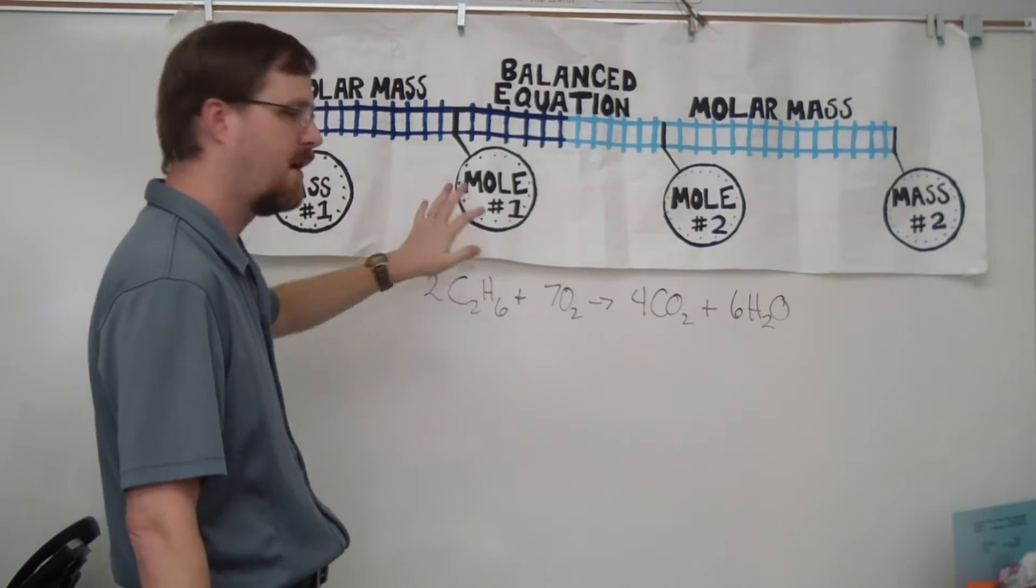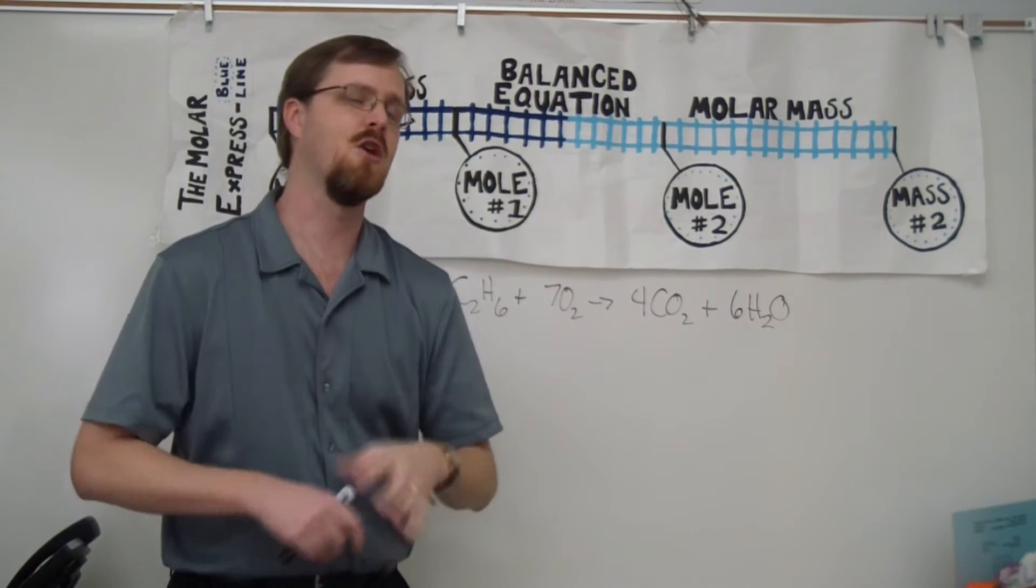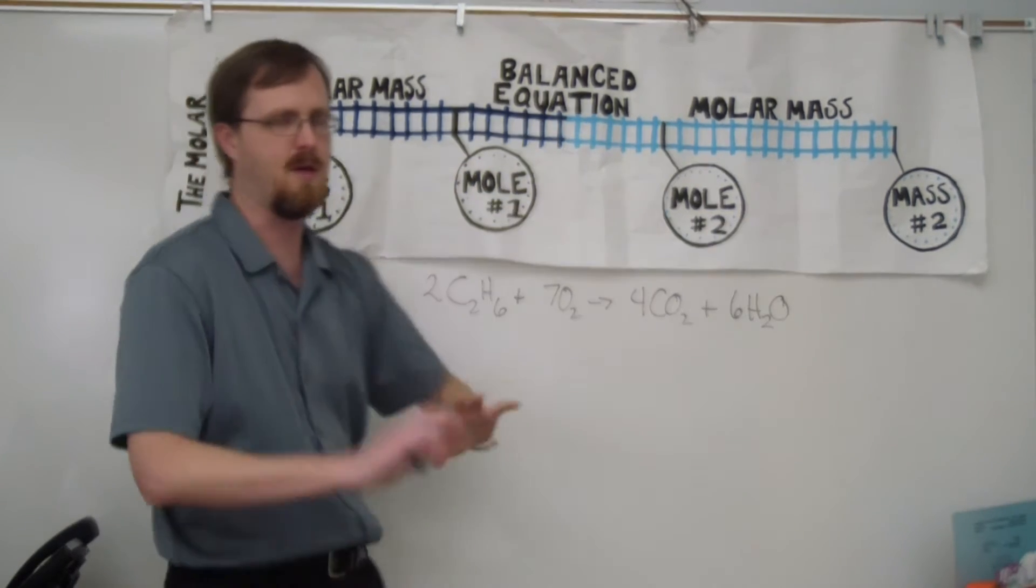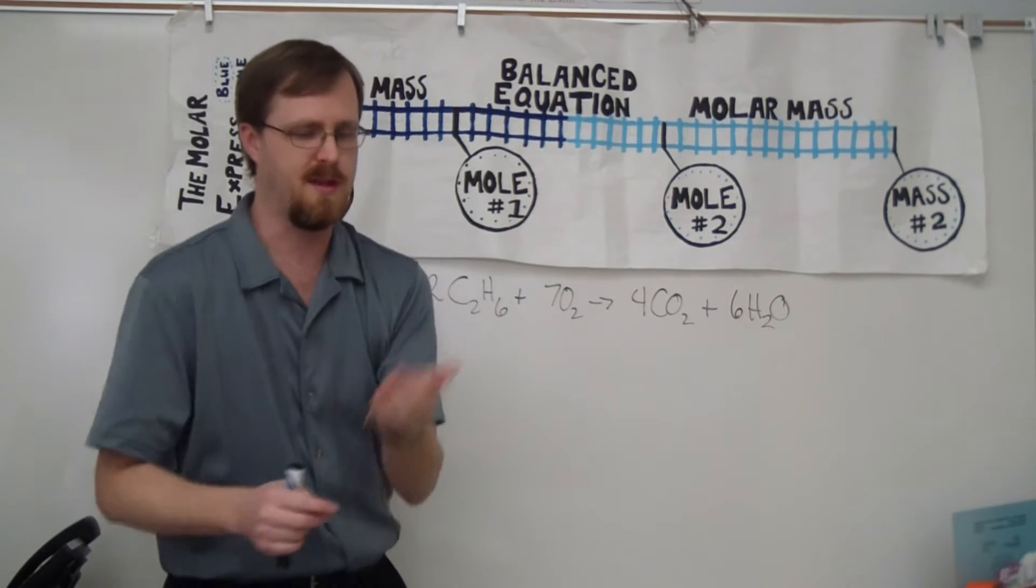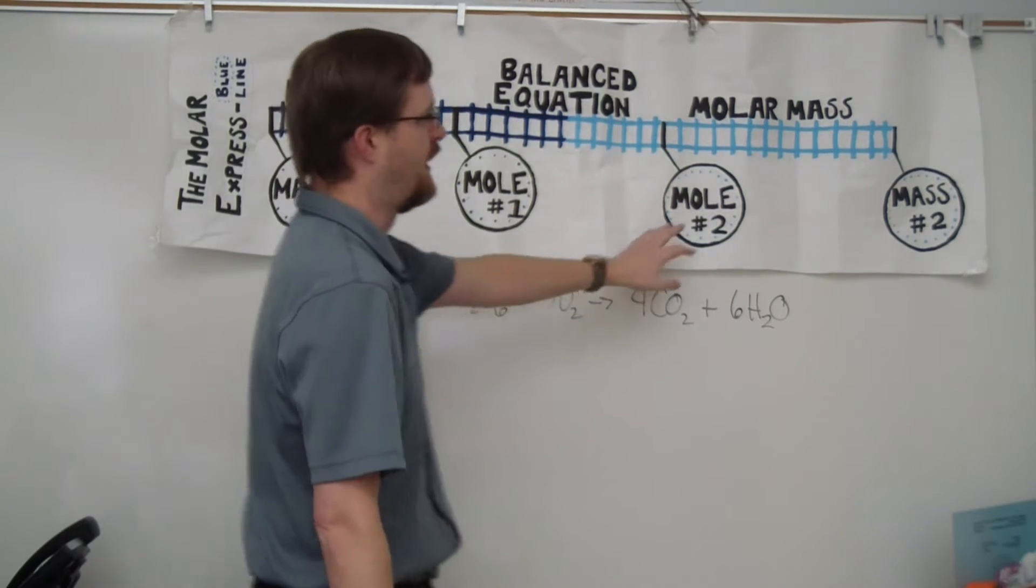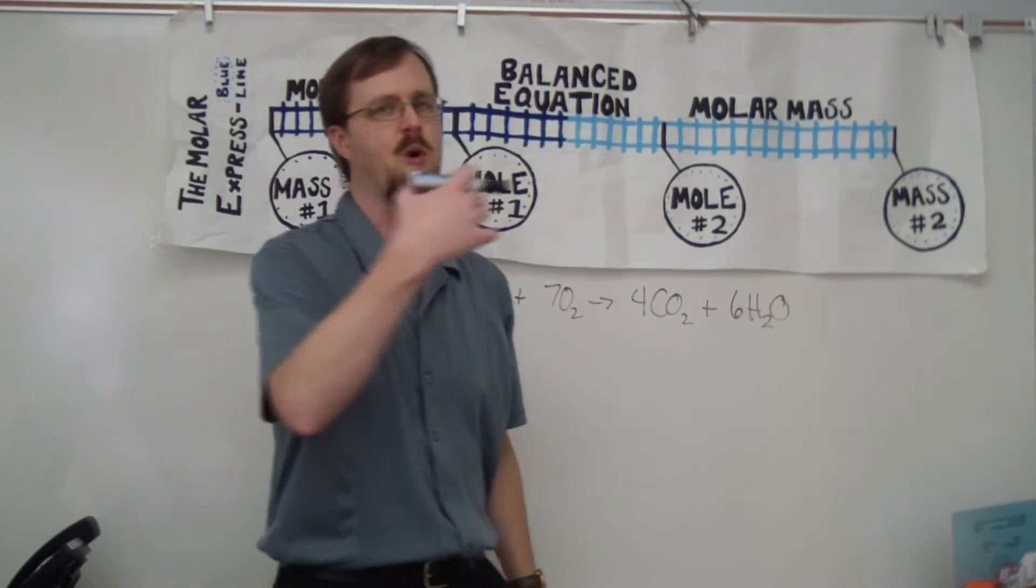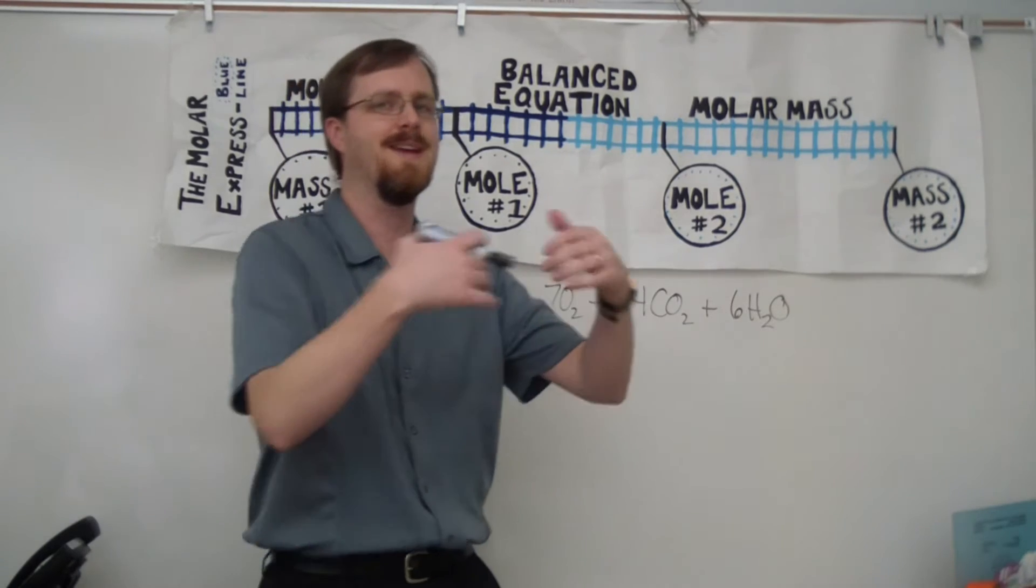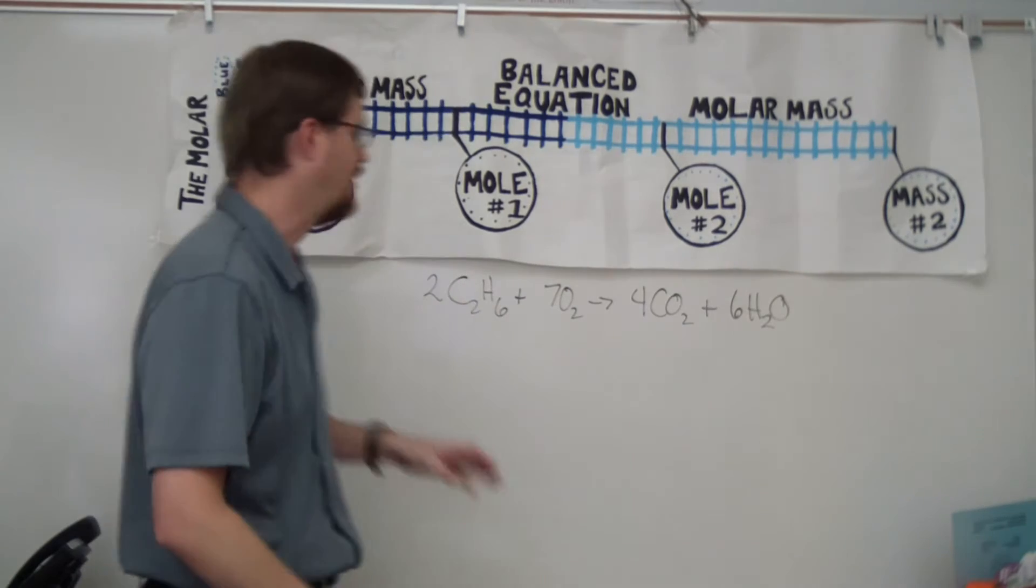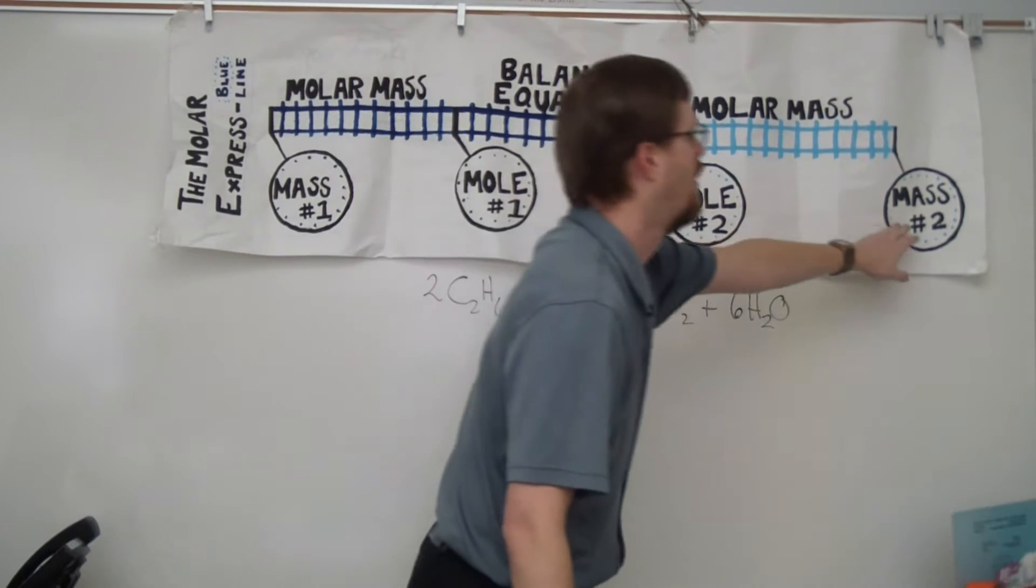So number one is referring to the substance that is given to you in the question. Which means that no matter what, you are either going to start at mass number one or moles number one. You are always going to start with either grams or moles of whatever the question gives you. The number two here is referring to the substance that the question is asking for. So you are either going to convert into moles or grams of that second substance. So you are either going to start at mass one or moles one, and then you are going to end at either moles two or mass two.